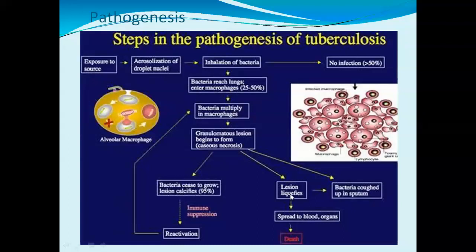When the lesions get liquefied, the bacteria enter the blood and spread to different organs, which can ultimately lead to the death of the patient. Pathogenesis refers to the mechanism by which a particular bacterium or pathogen causes infection or disease — meaning the different steps involved in disease development.